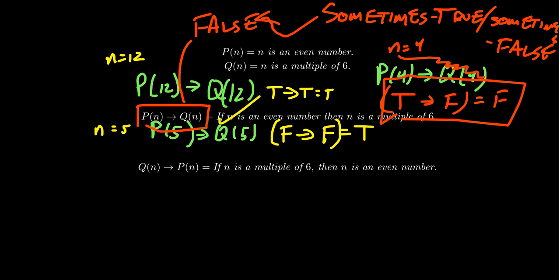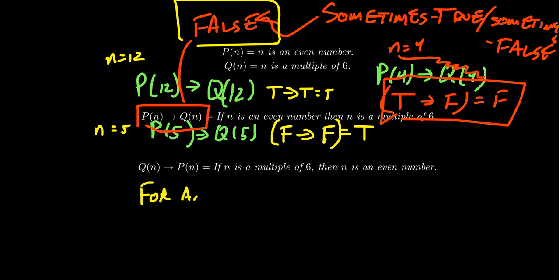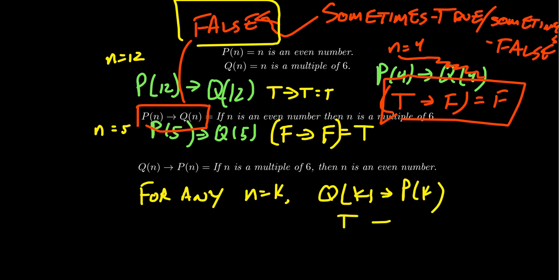This is in contrast to the other direction, Q(N) implies P(N): for any instance N equals k, if Q(k) is true, then P(k) is true — whenever n is a multiple of 6, n is an even number, as we saw in the proof. The key takeaway: if a conditional is sometimes false, that makes the actual conditional statement false. There is no 'sometimes true, sometimes false' — a conditional is either true or false. If it's not always true, that makes it a false conditional statement.